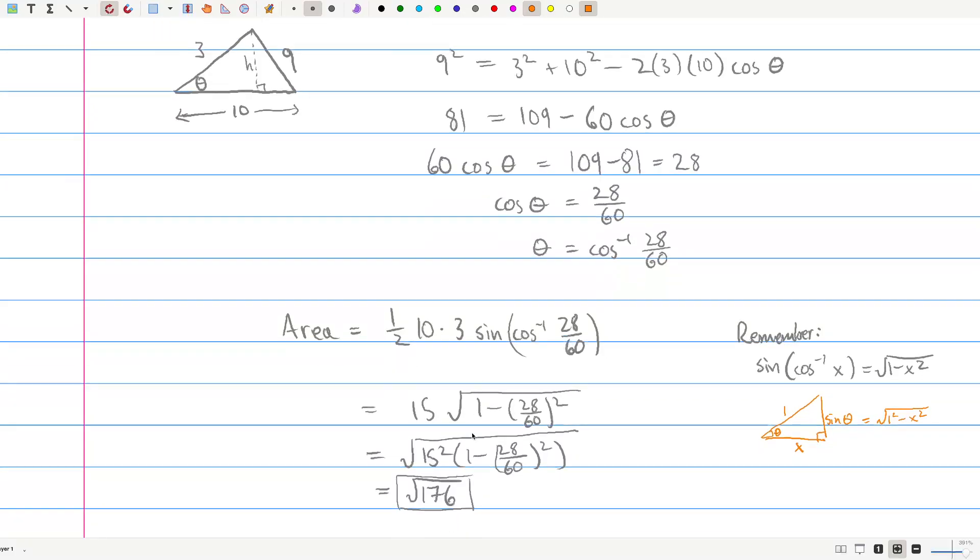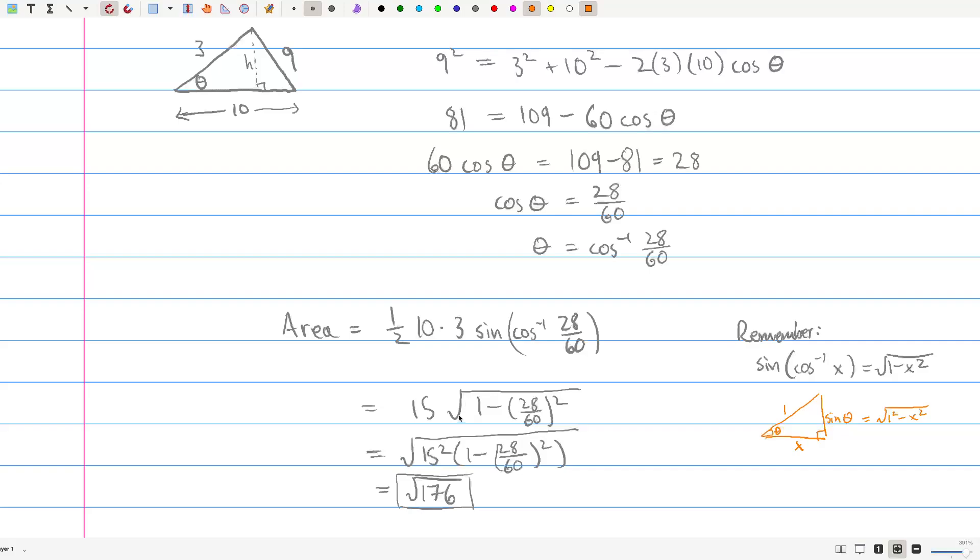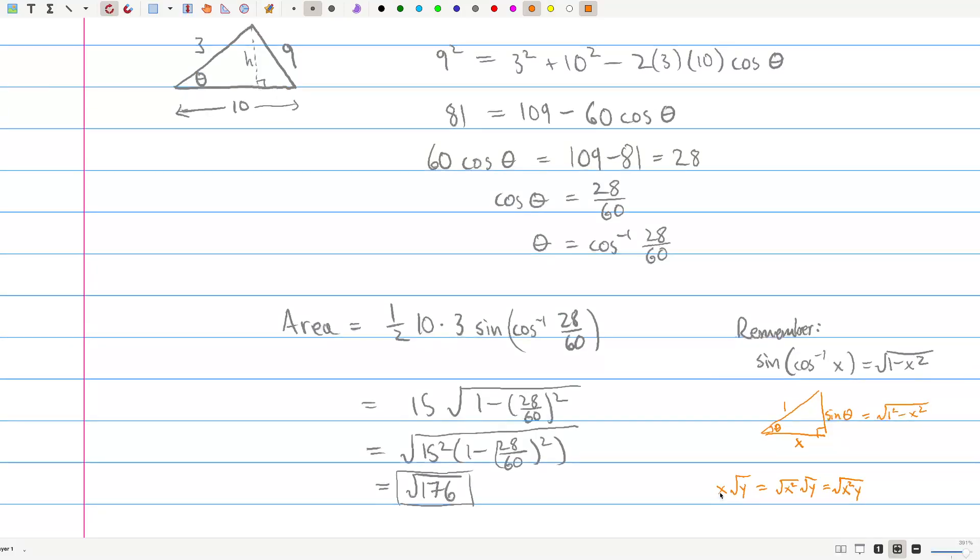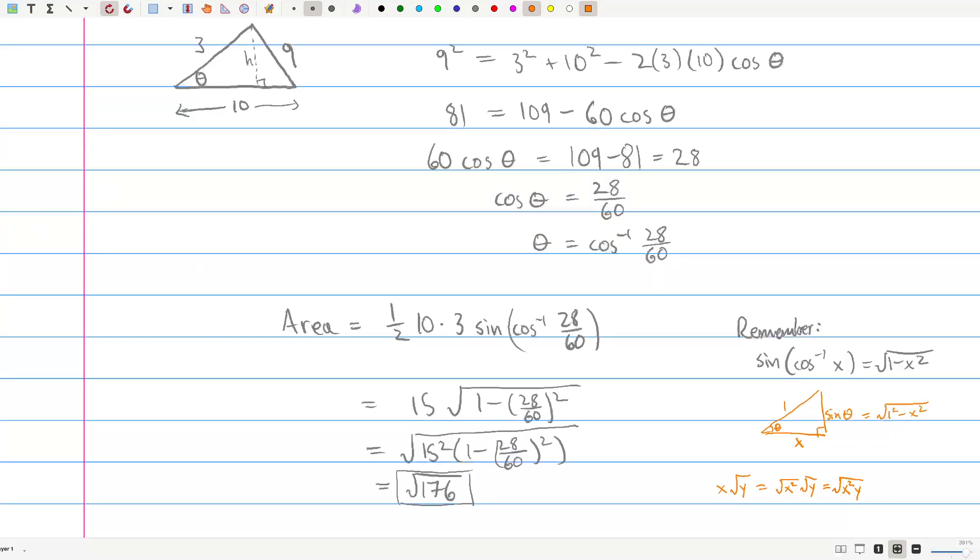And then I want to show you that it is the same as the square root of 176. So remember that if you have a number times, let's write this as x square root y. This is the same as square root of x squared square root y, which is square root of x squared y. You can move constants inside a square root so long as you square them. And also the constant has to be positive for that to work. So 15, we put it inside by squaring it. And then on a calculator, I just checked that the inside here really is 176. So this was a way using the law of cosines and our area formula from the previous video to calculate the area. Great, it matches Heron's formula.